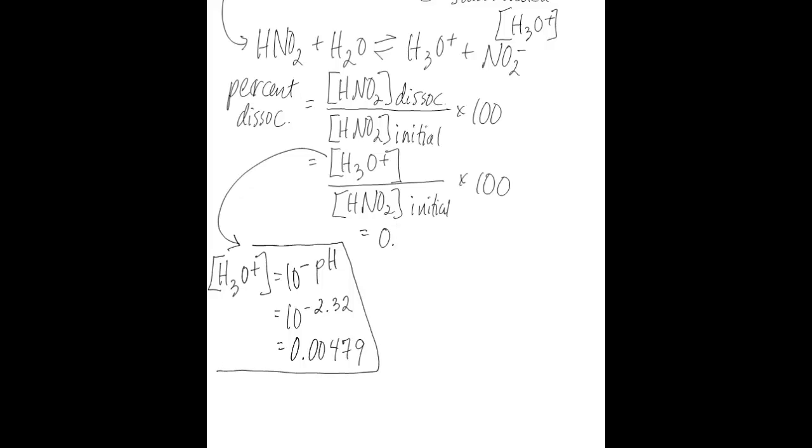We have 0.00479 as our hydronium ion concentration divided by the initial HNO2 concentration, which is 0.05 molar, multiplied by 100. When you do the math, this acid is 10% dissociated when the pH is 2.32 and the acid concentration is 0.05 molar.